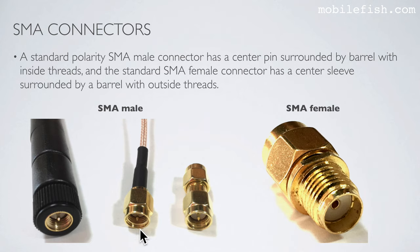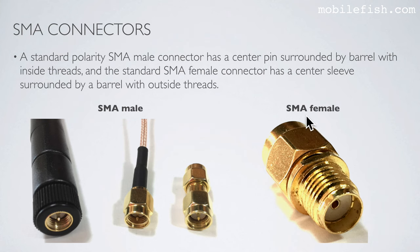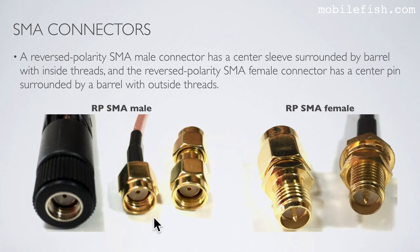For example: look at the barrel — if the thread is on the inside, this is an SMA male. Second step, look at the center: if the male has a pin, then this is called SMA male. Another example: the thread is inside, which means this is SMA male. Then look at the center — it has a sleeve, which means this is an RP SMA male.